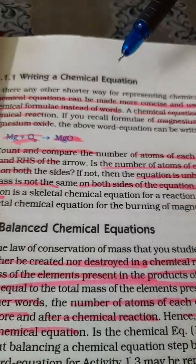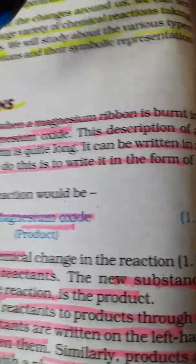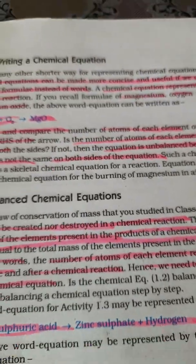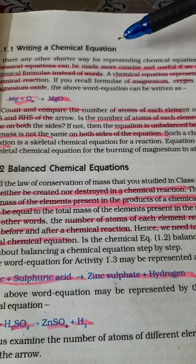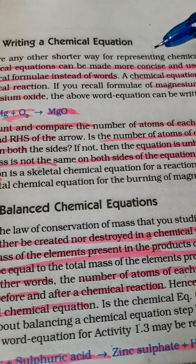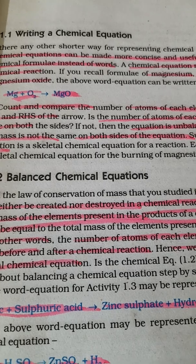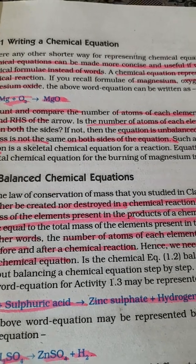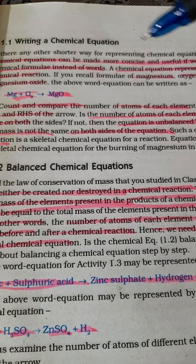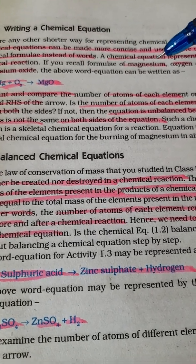How do you write a chemical equation? We represented this reaction using words. There are short ways to represent chemical equations. Chemical equations can be made more concise and useful if we use chemical formulas instead of words. Instead of writing magnesium in spelling you can just use the symbol.